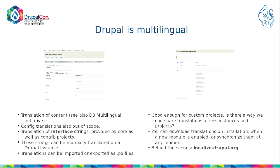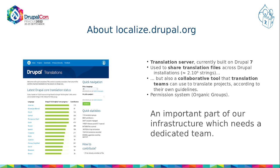But is there a way we can share translations across projects and instances? Whenever you install Drupal for the first time in another language other than English — for example, Czech — when you select it in the list, Drupal will download translations for you. Or whenever you install a new module, or whenever you decide to manually synchronize translations. Behind the scenes, Drupal is contacting a translation server — most likely, localize.drupal.org.